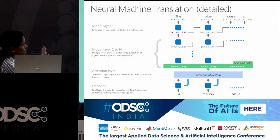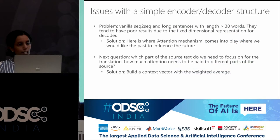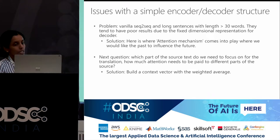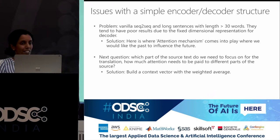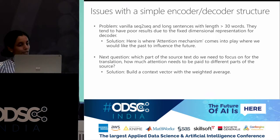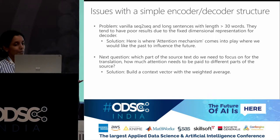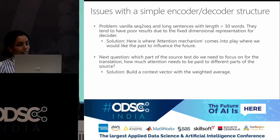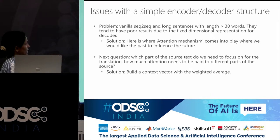This is how the entire NMT actually works. If you use a vanilla sequence-to-sequence model, especially with very long sentences — typically greater than 30 words — it tends to have very poor results because of the fixed dimensionality of the decoder. That's where the attention layer comes in and helps influence the past onto the future prediction of the word. The next question is: which part of the vector should I focus on? You build a context vector with some sort of weighted average to do that.